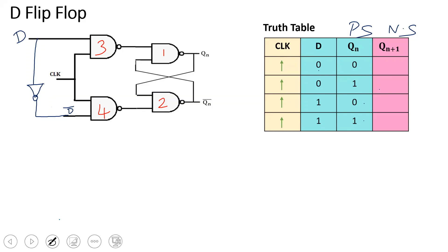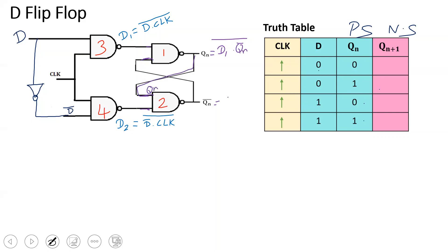Gate 3 output is D1, and gate 4 output is D2. D1 equals (D · clock) bar. Similarly, D2 equals (D bar · clock) bar. The gate 2 output is Qn bar. Qn bar equals (D2 · Qn) bar. There are two conditions: when D is equal to 0 and when D is equal to 1.